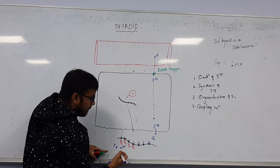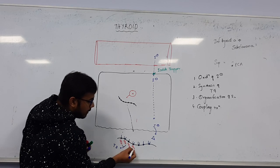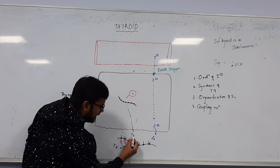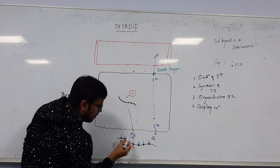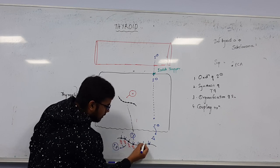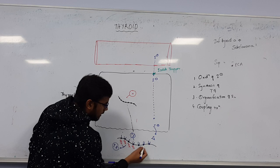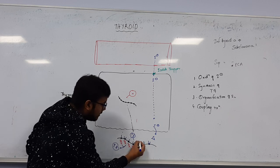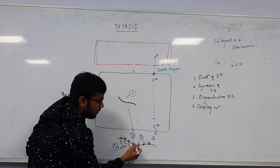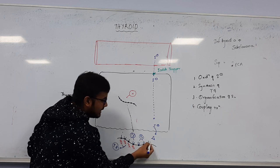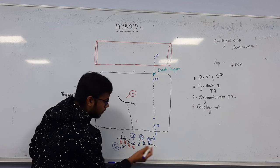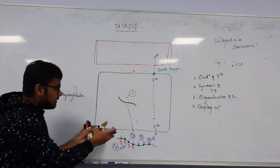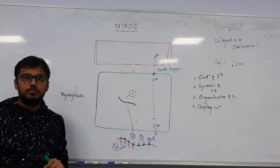MIT plus DIT gives T3 again. But di-iodotyrosine plus di-iodotyrosine gives T4, and MIT plus MIT gives T2. This reaction is called the coupling reaction. So far, we have discussed four steps: oxidation, synthesis of thyroglobulin, organification, and coupling.